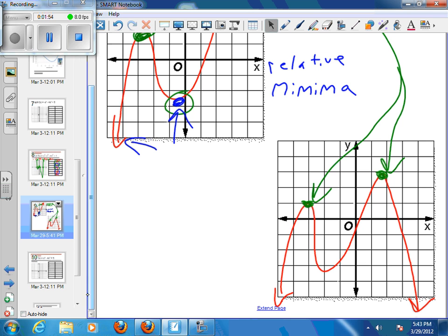And then on the bottom one, here, right here at this point, we have a relative minimum. Again, we get a lot smaller going further in the right and further to the left. But right there in the middle of the graph, that is the minimum point, so it's a relative minima.